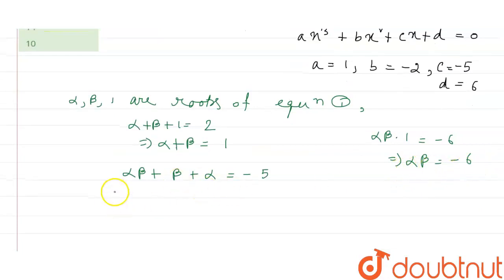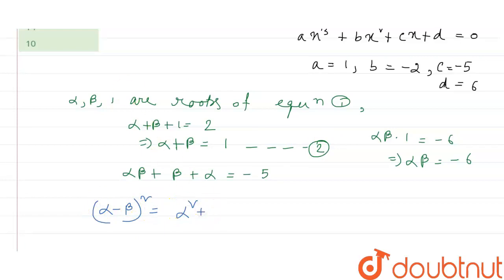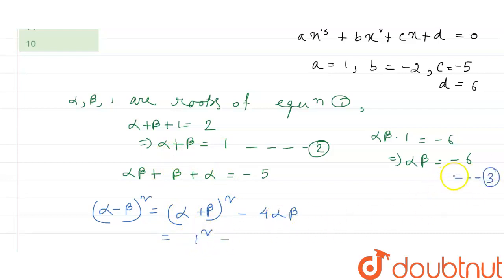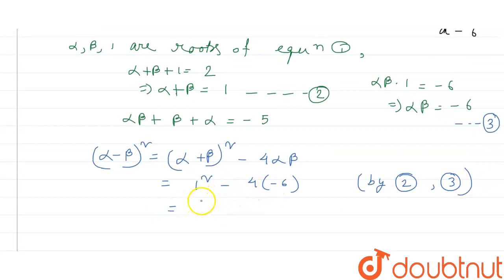Putting the value of alpha·beta: from this we get alpha + beta = 1, which is marked as equation 2. We know (alpha - beta)² = (alpha + beta)² - 4·alpha·beta. So (alpha - beta)² = 1² - 4·(-6) = 1 + 24 = 25. Therefore alpha - beta = 5, marked as equation 4.